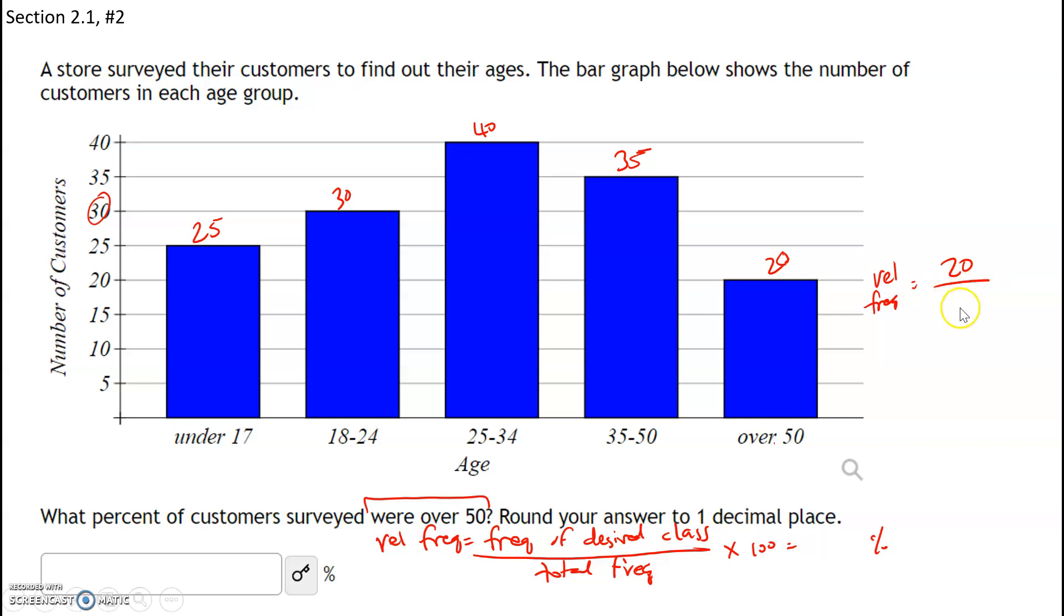To get the total frequency, we're going to add 25 and 30 and 40 and 35 and 20. That gives us our total frequency. If we add up 25 and 30, that's 55 and 40, that's 95 and 35, that's 130 and 20, that's 150. So our total frequency is 150.